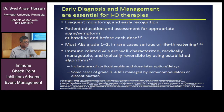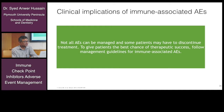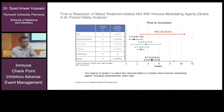Immune-related adverse events are well characterized, medically manageable, and typically reversible using established algorithms. These include the use of steroids and treatment interruptions or delays. Some grade 3-4 adverse events are managed by immune modulation or discontinuation. Not all adverse events can be managed, and some patients may have to discontinue treatment, but following management guidelines gives the patient the best chance of therapeutic success.